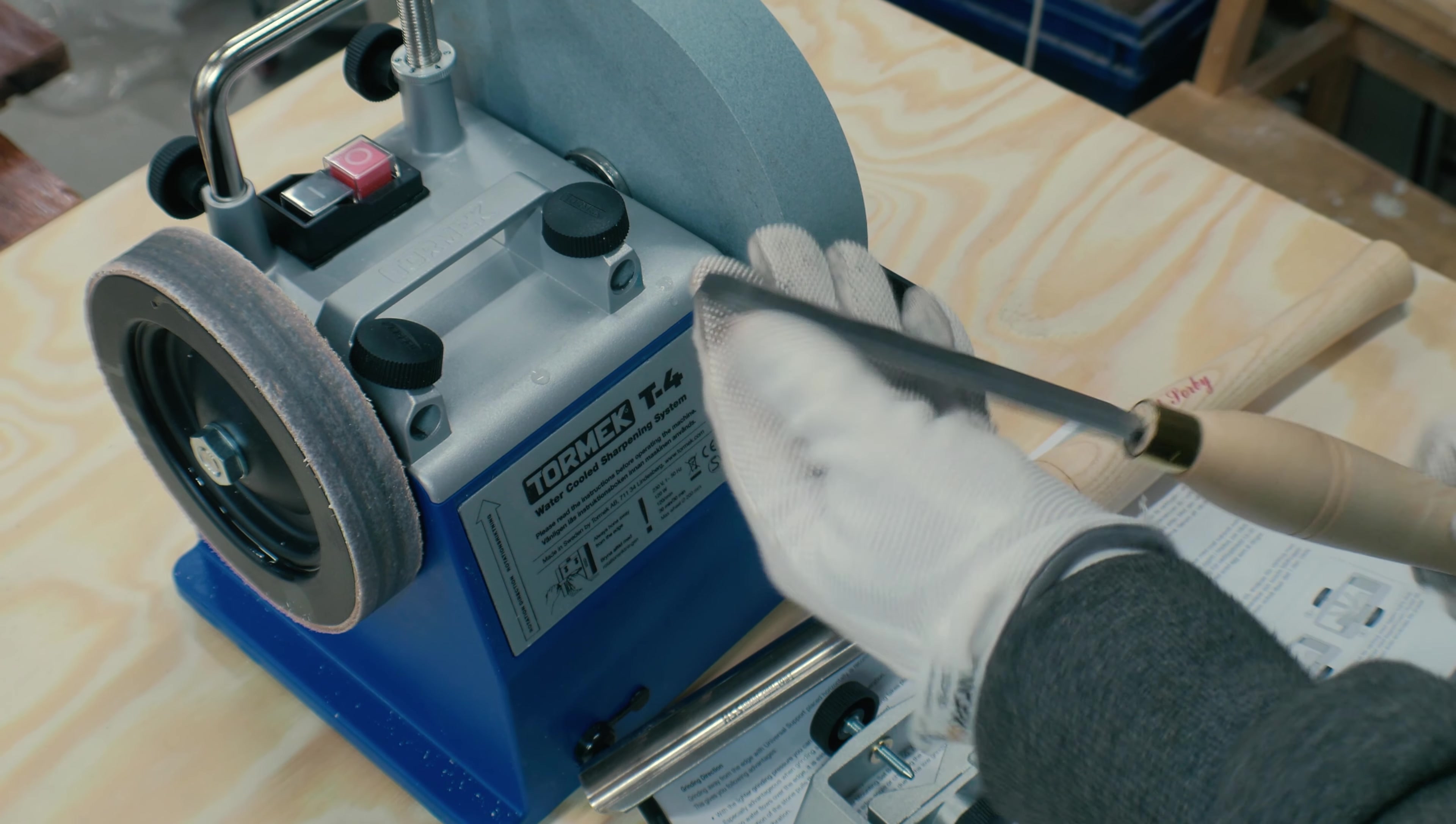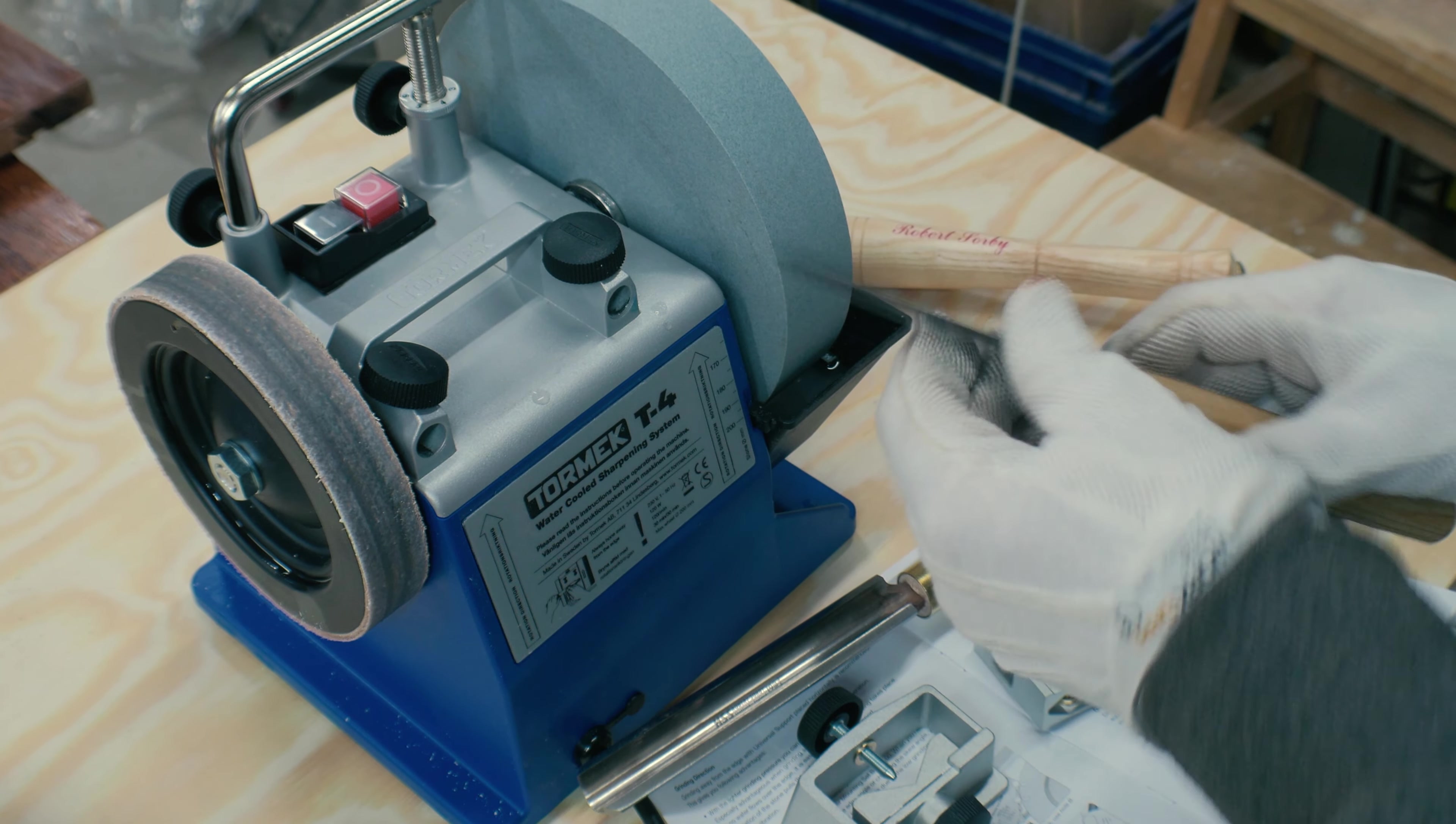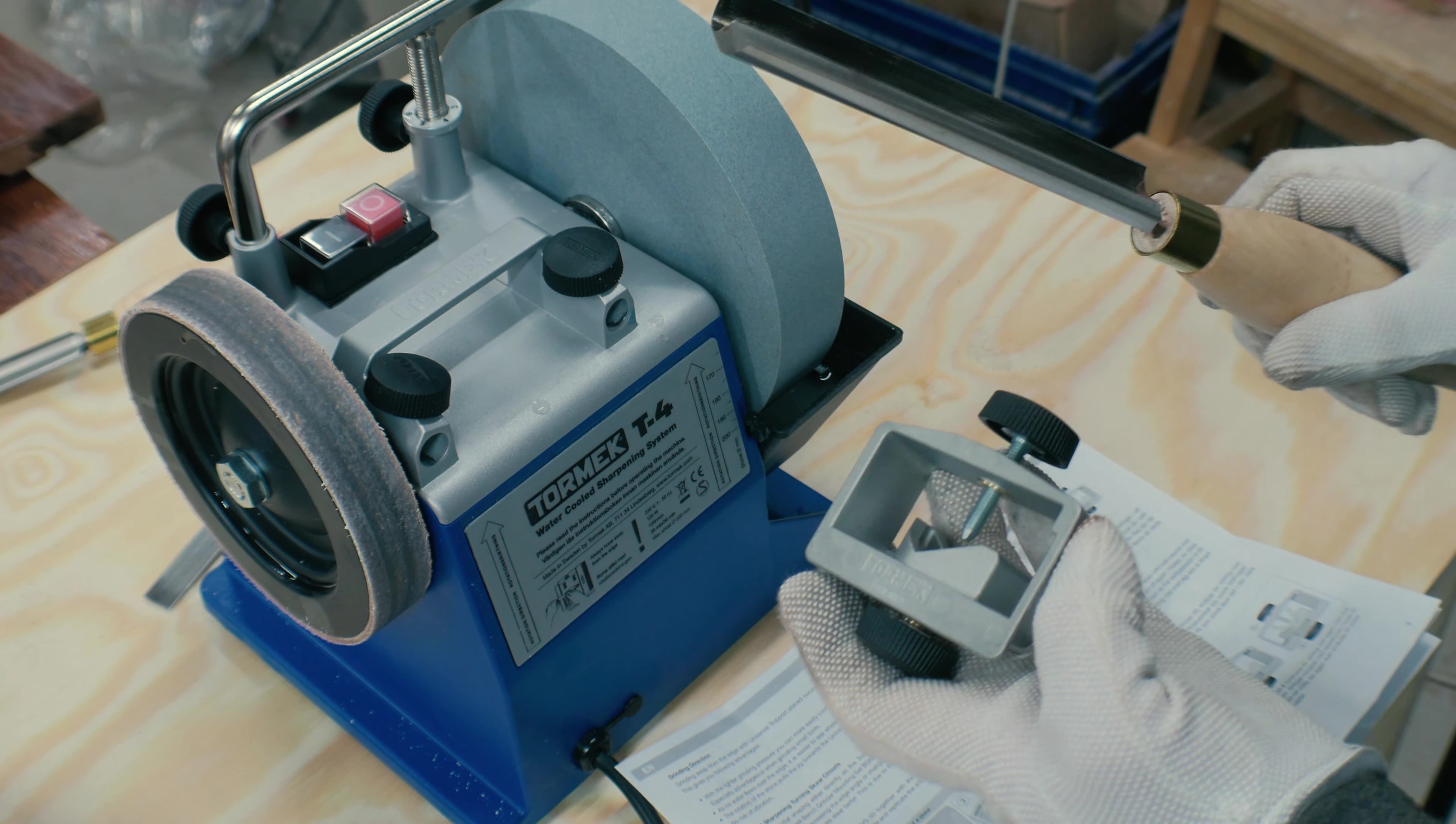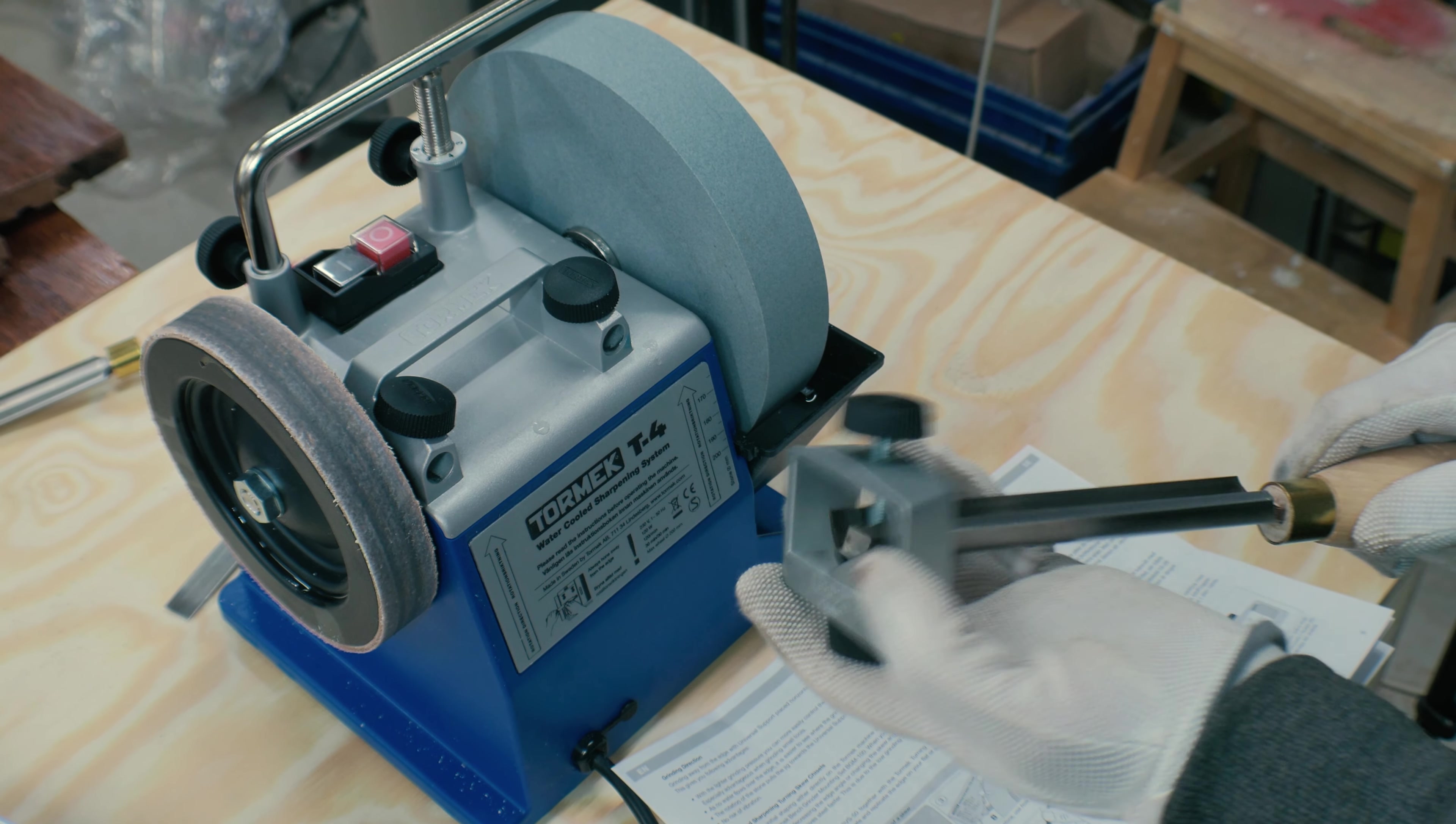I also have this skew chisel, which I'm going to try to sharpen, and I have this regular chisel. To sharpen the roughing gouge, we need to use the tool like it is here.